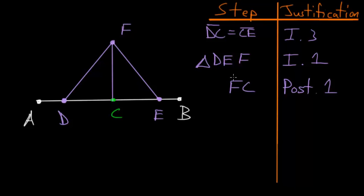We just created FC and from here we can notice some things about the two triangles FDC and FCE. The line FD and FE are equal to each other because the triangle FDE is equilateral, and we also know that the line DC is equal to the line CE.